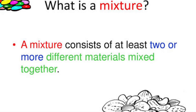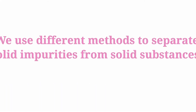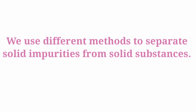Now, what is a mixture? A mixture consists of at least two or more different materials mixed together. A mixture contains two or more types of substances. We use different methods to separate solid impurities from solid substances, which we will learn about in this video.